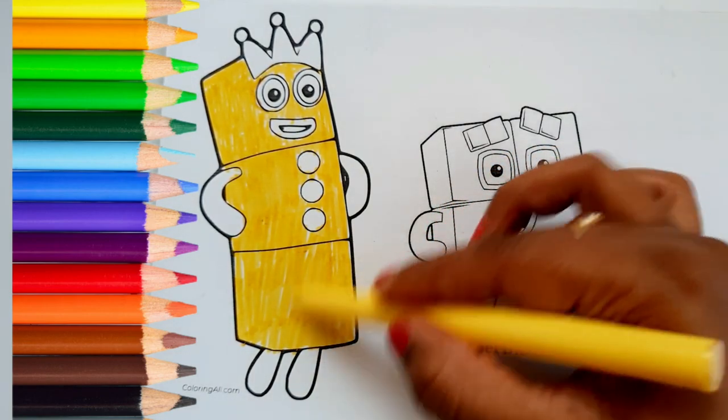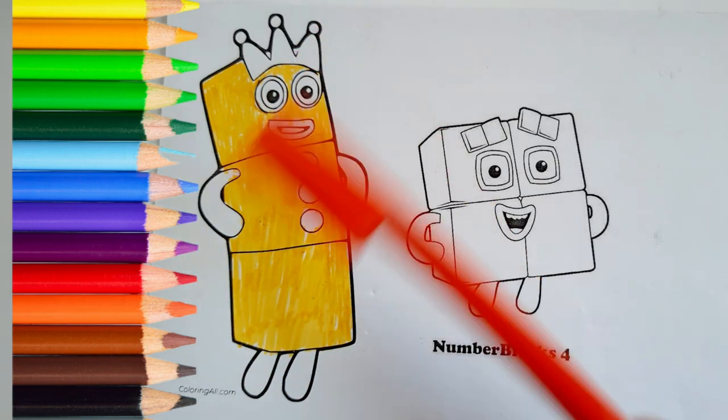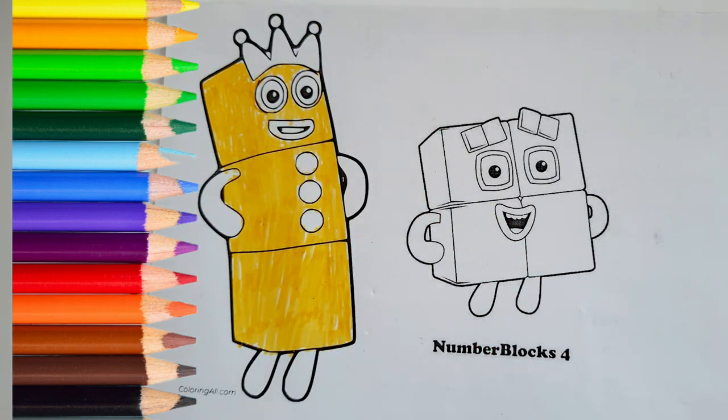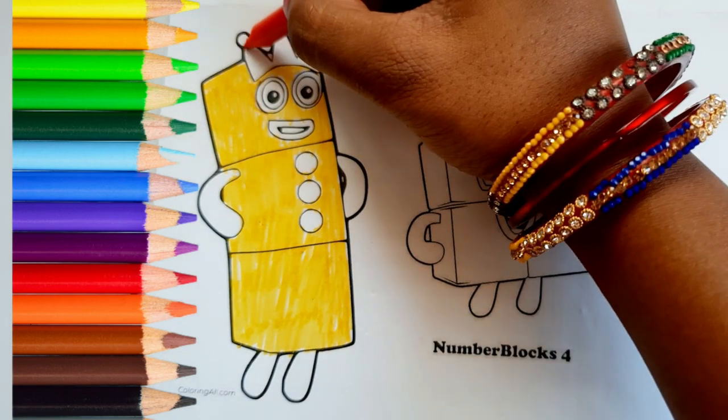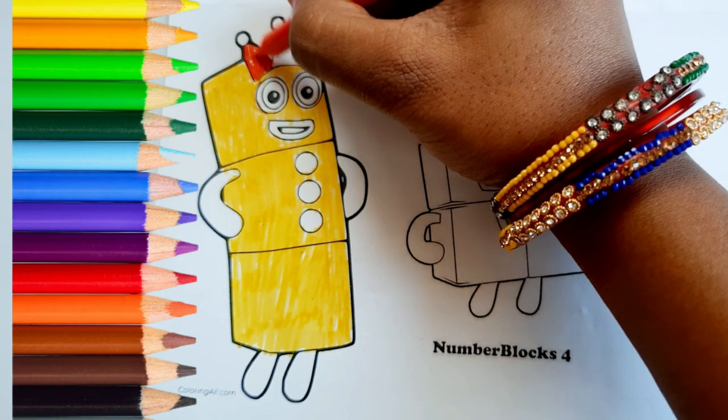Now we need red color to color crown, hands and legs of number block 3.